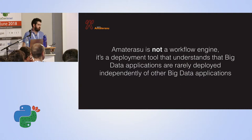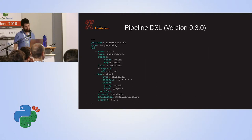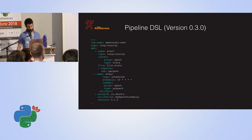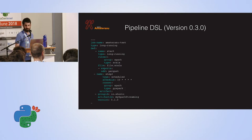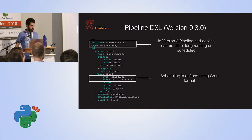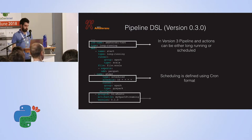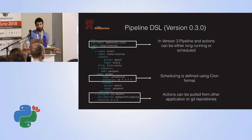Data applications depend on other data applications — that's how it works. In our next version, hopefully a few months away, we are going to support long-running tasks and scheduled tasks, which we don't support right now. Right now we support on-demand invoked tasks. You can also have scheduled actions on long-running tasks, and you can import actions from other repos, from Giles, for example.